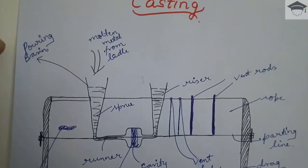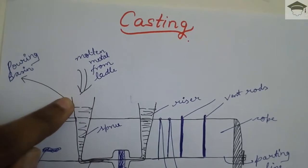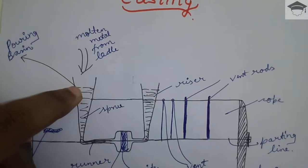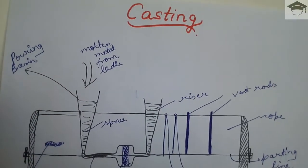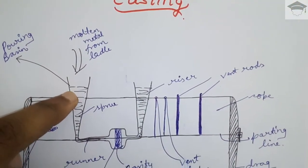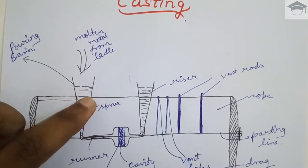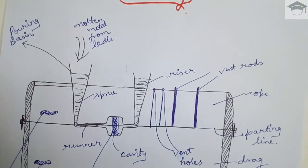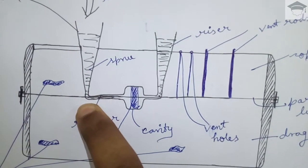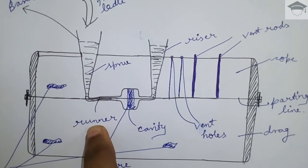So I am going to explain you. First, this is the pouring basin. Here the molten metal from the ladle is poured in this basin. Now ladle is the vessel in which the molten metal is carried. So molten metal from ladle is poured into the pouring basin. Then this molten metal travels down through a vertical opening which is known as sprue. Then after that when it has reached to the bottom, it travels horizontally. This horizontal portion is known as runner.